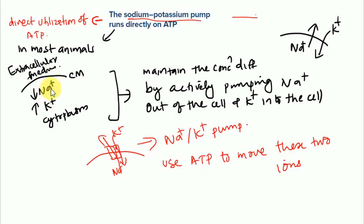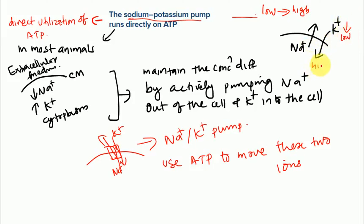Within the cell there is a low concentration of sodium, and in the extracellular medium there is a high concentration of sodium. So the movement of Na+ is from a region of low concentration to high concentration, which requires ATP. K+ is high in the cytoplasm and very low in the extracellular medium. Na+ moves from cytoplasm to extracellular medium, and K+ moves from the extracellular medium to the cytoplasm — both moving from low to high concentration.